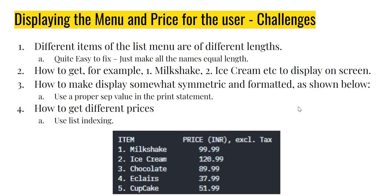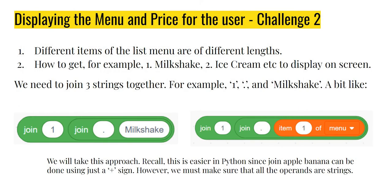This is really not very hard if we go step by step and fall back to Scratch. For challenge number two, we need to join three strings together — for example, join '1', '.', and 'milkshake'. In Scratch, join apple banana concatenates two strings, so join('.', 'milkshake') gives '.milkshake', and joining '1' with that gives '1.milkshake'. Extending this: milkshake, ice cream, cupcake, etc. are all part of a list, so the same statement could be written as join('1', '.', menu[1]) — these items are coming from a list and we can index into it.